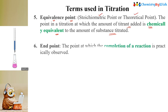The next term is the end point. The point at which the completion of a reaction is practically observed is called the end point. The point at which the completion of the reaction is practically observed by color change is called the end point.